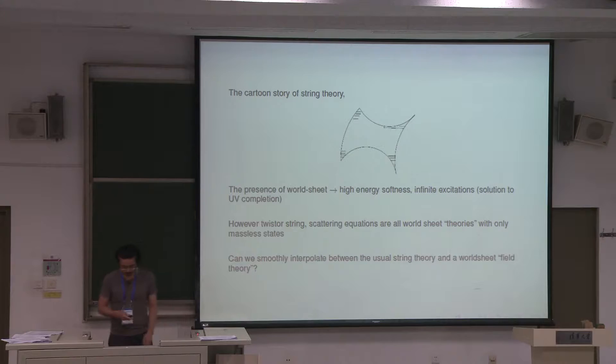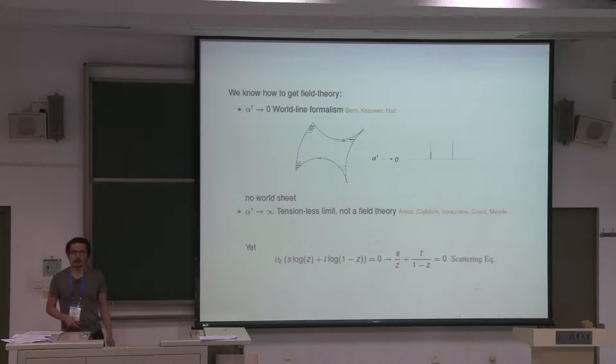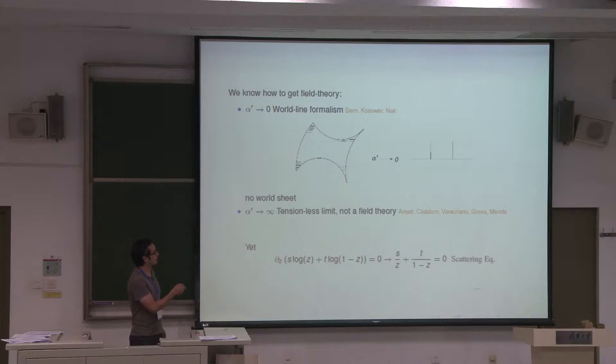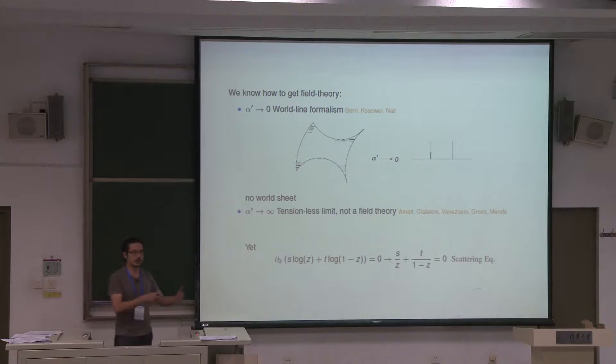We already know how to get field theory out of string theory. There are two limits we can try. First, we can take the alpha prime to zero limit, the infinite tension limit, but then we lose the world sheet — the world sheet essentially collapses into a world line. This is precisely the early work of Bern, Kossauer, and Nair, where they computed tree-level amplitudes from string theory by taking alpha prime to zero.